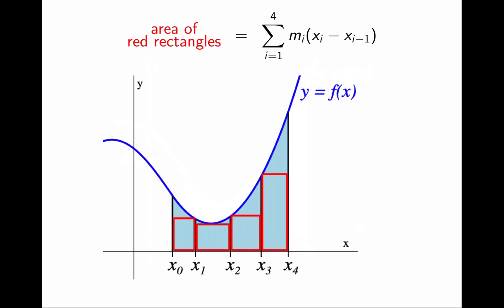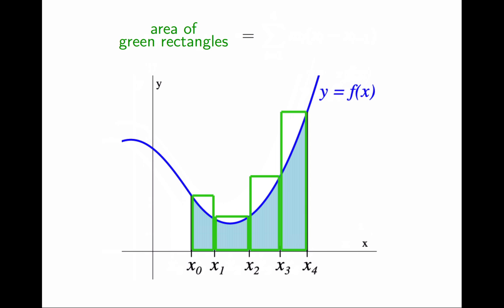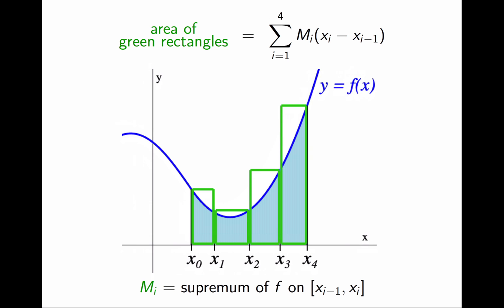The sum is mᵢ times (xᵢ - xᵢ₋₁). That was the area of the four red rectangles, as an underestimation. You see that we can do the same thing with the four green rectangles, as an overestimation. The only difference is that the height of each rectangle will be the supremum rather than the infimum of the function f on the corresponding sub-interval.